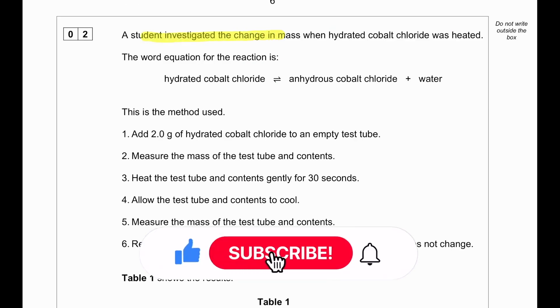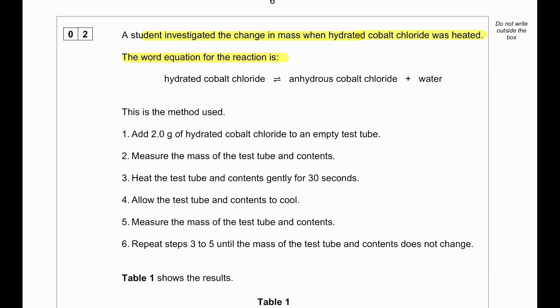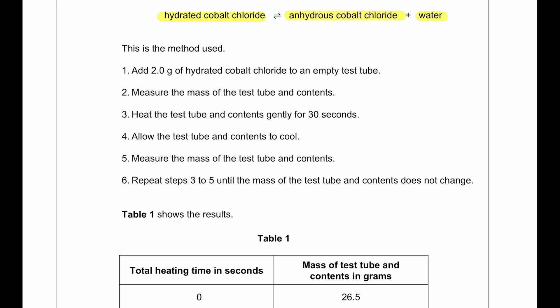A student investigated the change in mass when hydrated cobalt chloride was heated. The word equation for the reaction is hydrated cobalt chloride in a reversible process turns into anhydrous cobalt chloride and produces water. This is the method used. The student added 2 grams of hydrated cobalt chloride to an empty test tube and measured the mass of the test tube and contents. Heat the test tube and contents gently for 30 seconds, then allow the test tube and contents to cool and measure the mass. Repeat steps 3 to 5 until the mass of the test tube and contents does not change any further.